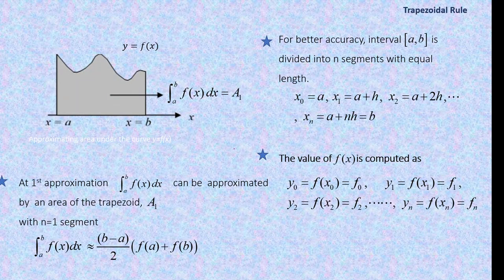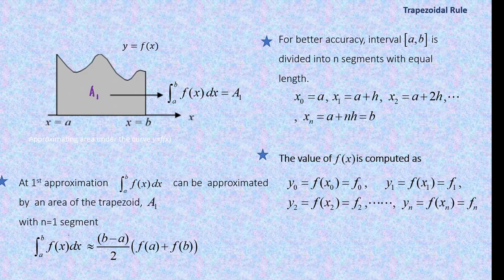For a better approximation of the area between x = a and x = b, if we estimate using one area — call it A₁ — using one segment of the trapezoid, with h = (b − a)/2, or h = (x₁ − x₀)/2, then we get f(a) + f(b).